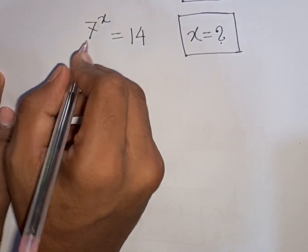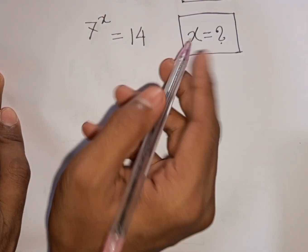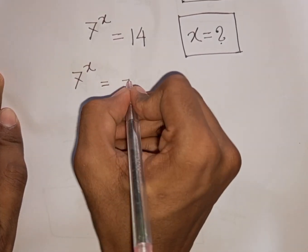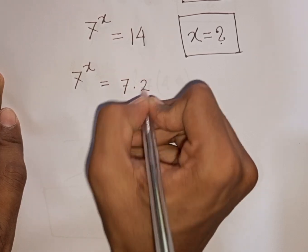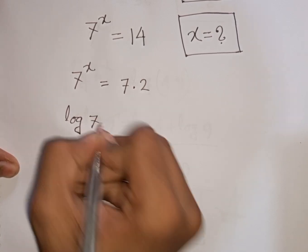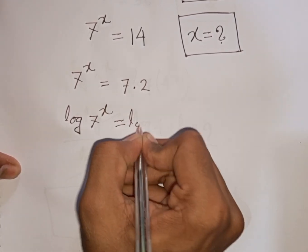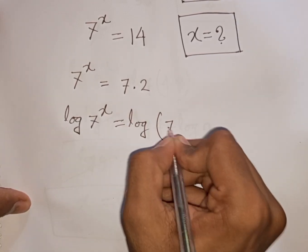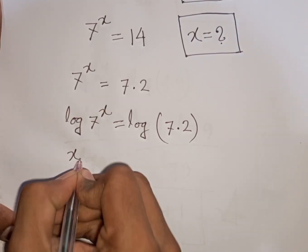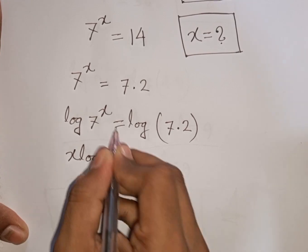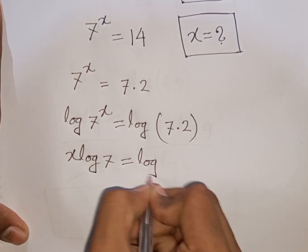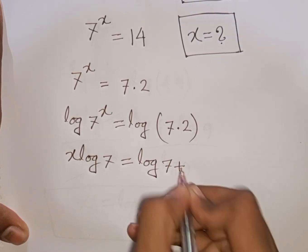How to solve 7^x = 14. Find the value of x. We have 7^x = 14, and 14 can be written as 7 times 2. Now we apply log to both sides: log(7^x) = log(7 × 2). The power x moves down, so x·log 7 = log 7 + log 2.